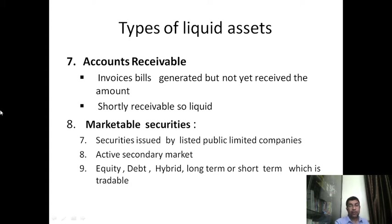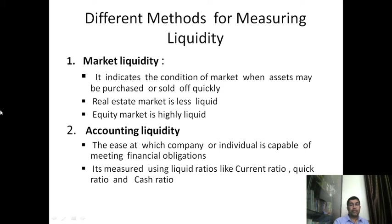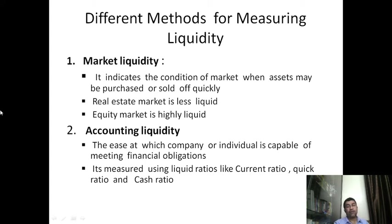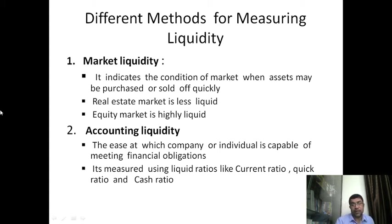Equity, debt, and hybrid long-term or short-term tradable securities are also liquid assets. Types of measuring liquidity: Market liquidity indicates the condition of a market when assets may be purchased or sold quickly. For example, stock market settlement has moved from 15 days to T+1 settlement. In mutual funds, you can get back your money within three days. Real estate is less liquid because selling requires long legal procedures, registration, and other steps, whereas the equity market is highly liquid.